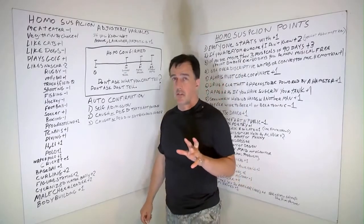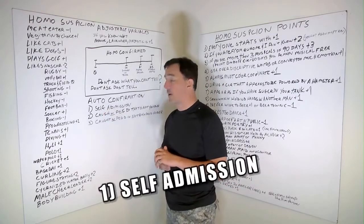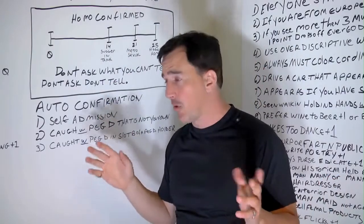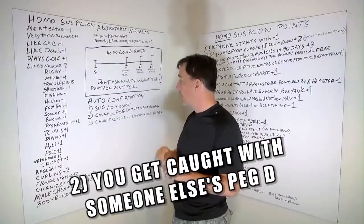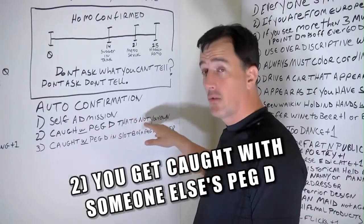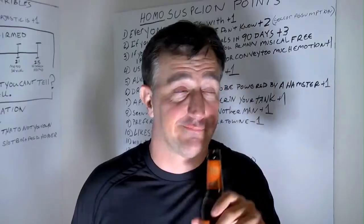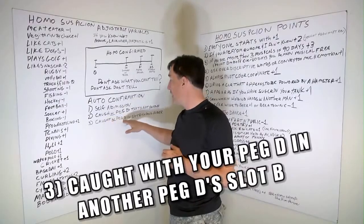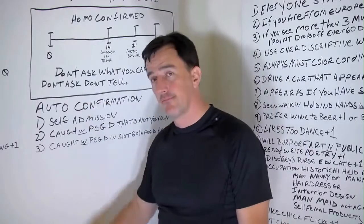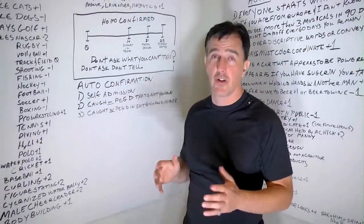Now we're going to come over to auto confirmation here. There's a few things that will get you an auto homo confirmed here. Okay, I had to put that in here. One, self admission. If you come out and say it, done deal. We have a beer and I tell you we're off the menu and that's swaying it. Okay. If you get caught with a peg D that is not yours, that's a homo confirmed right there, man. I'm just going to go with that. If you get caught with a peg D in a slot B of a peg D holder, auto confirmation. If you have any questions, just send me an email. I hope you all like this. If you don't, I don't care.